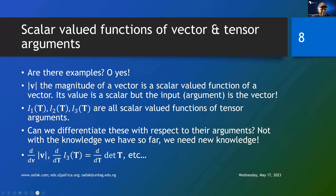Similarly, the three principal invariants of tensors are all scalars: I1, which is the trace; I2, which is the trace of the cofactor; and I3, which is the determinant. They are all scalar-valued functions of tensor arguments. So the input — the domain — is the tensor, and the value, when you supply the tensor, is a scalar. The trace is a scalar, the trace of the cofactor is a scalar, and the determinant is a scalar. They are all scalar-valued functions of tensor arguments.